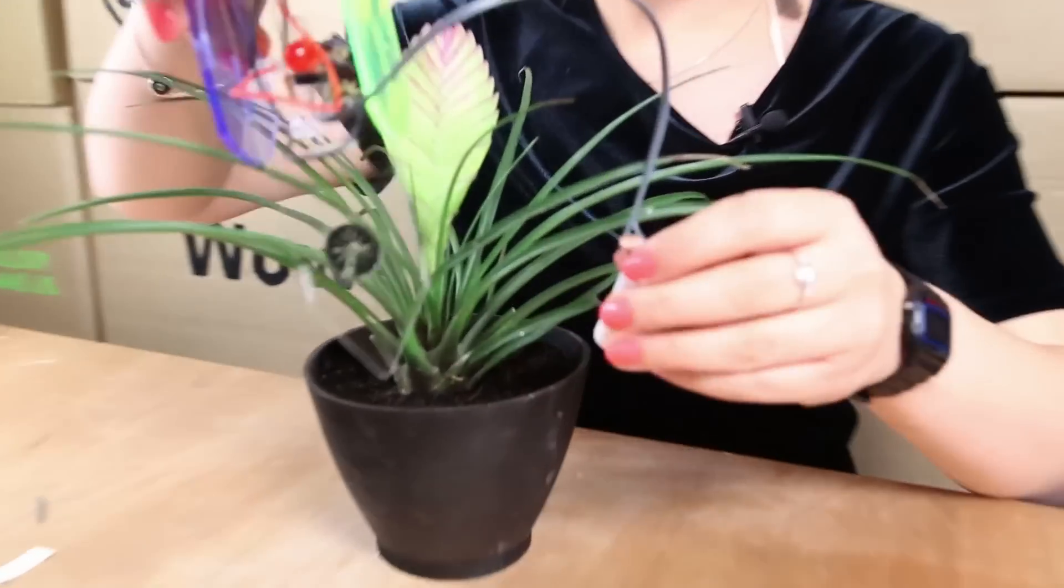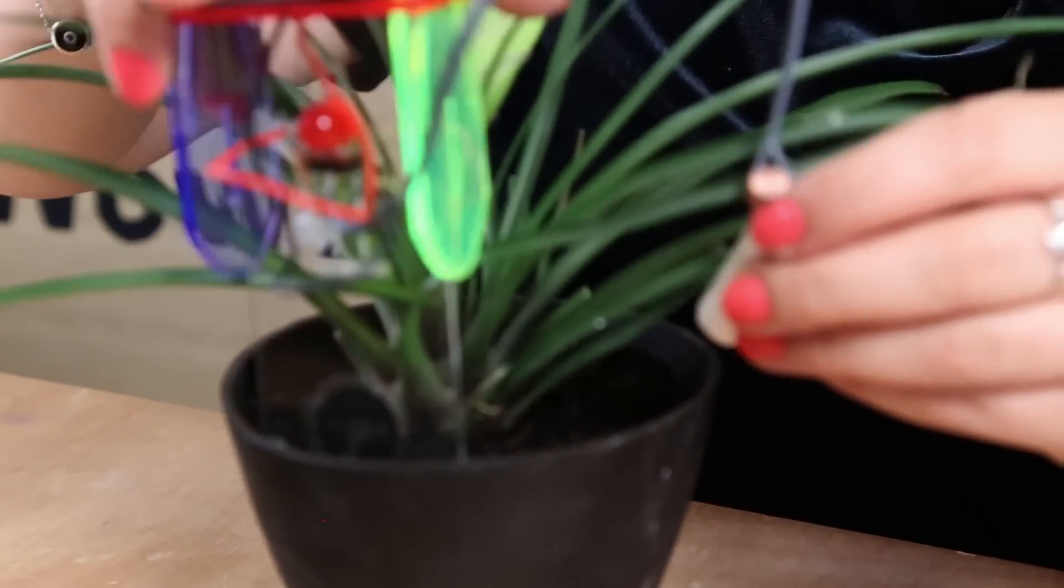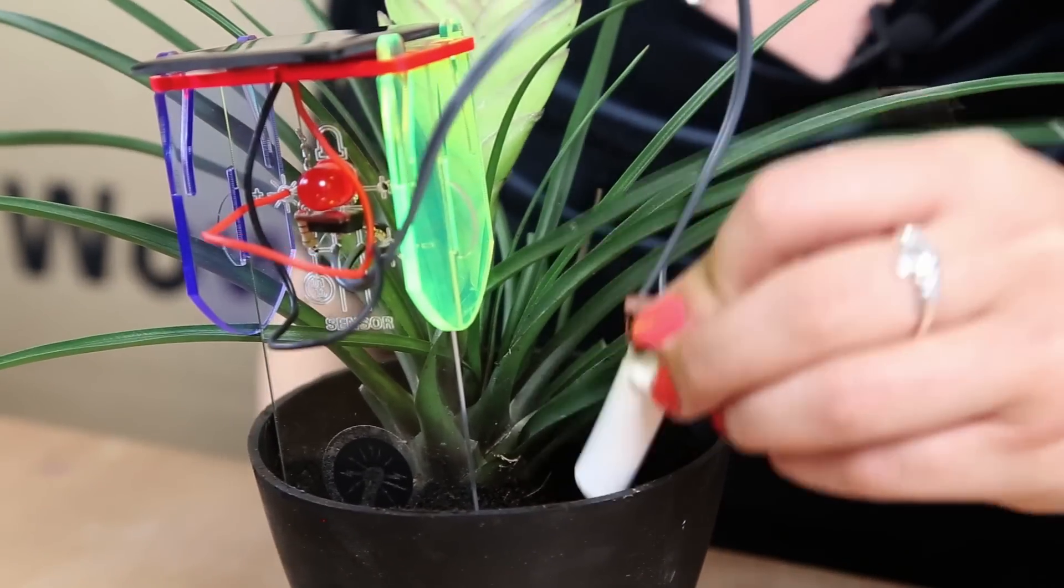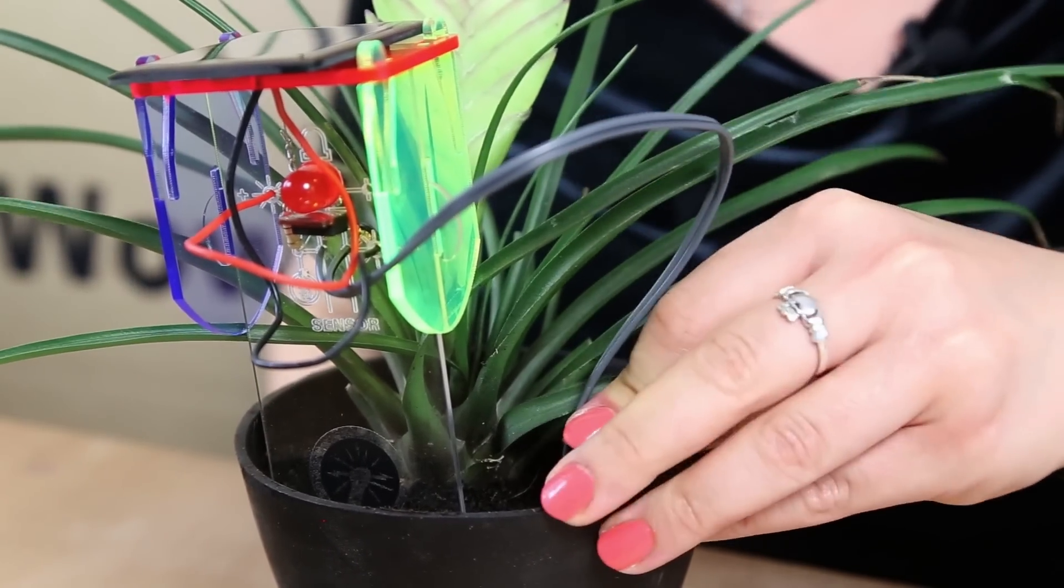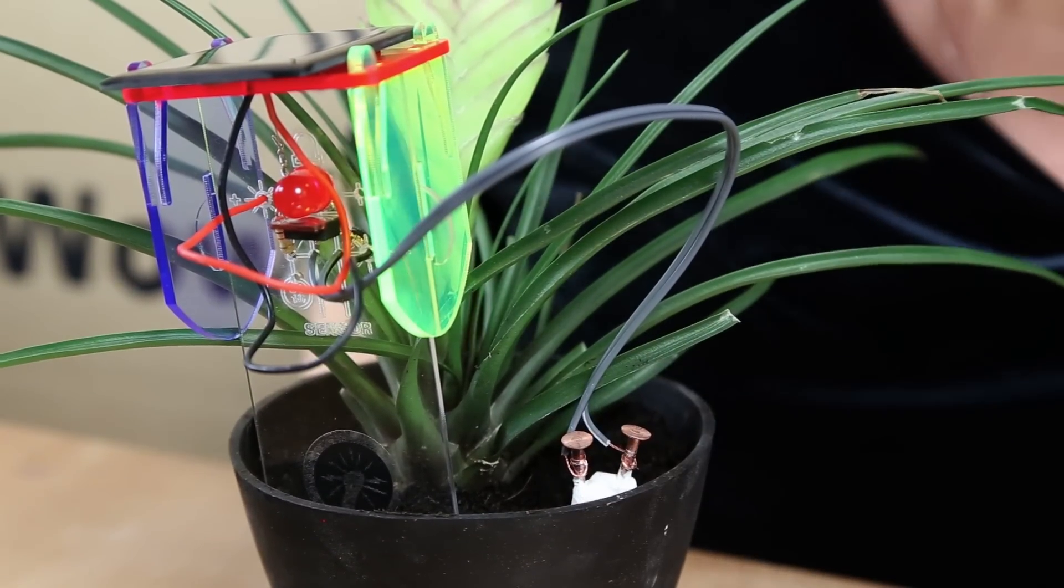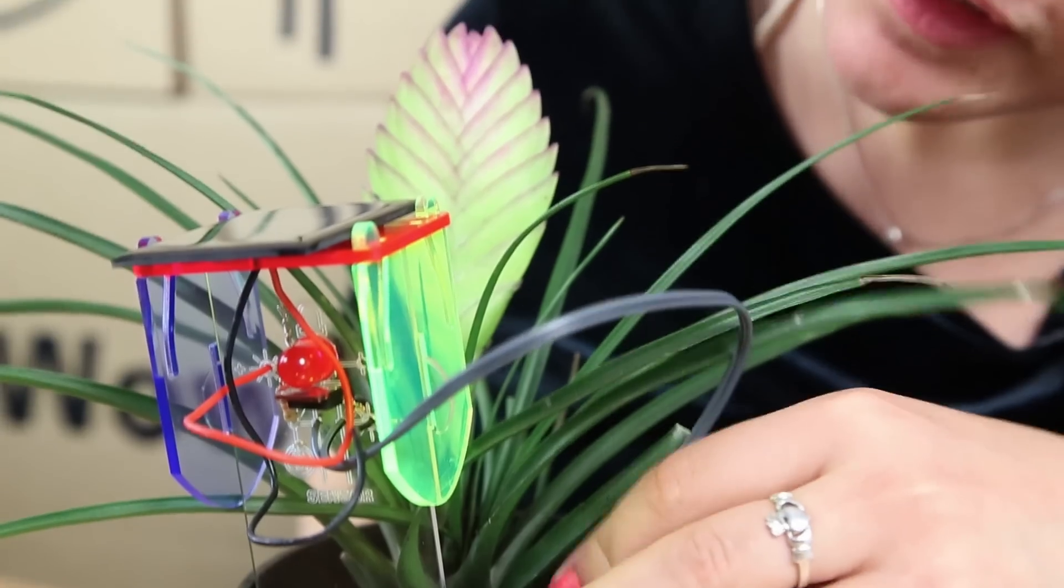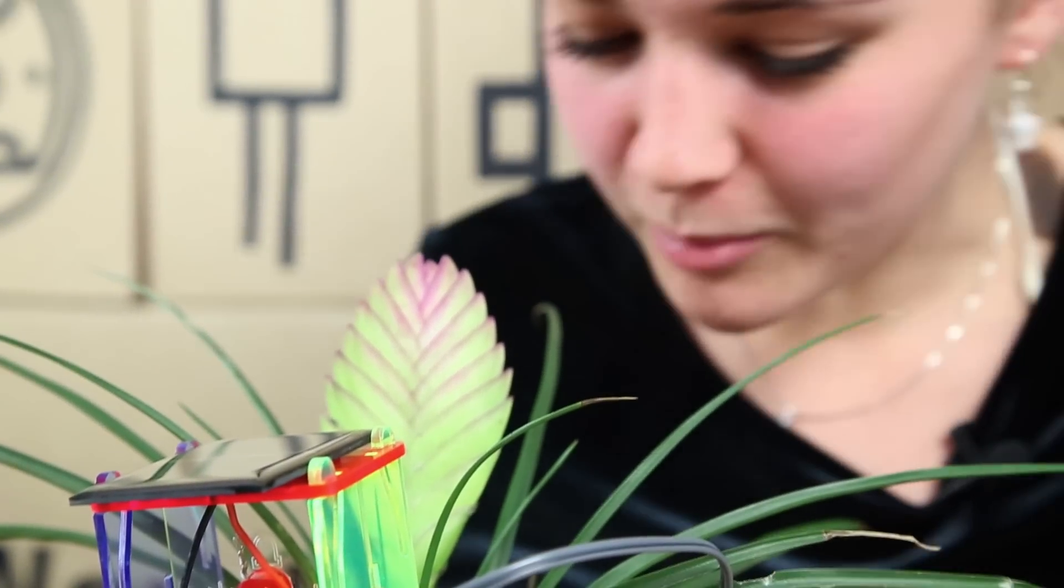So if you use the little pointy bit to stick it into the soil like that, and your sensor, the same thing. Stick it into the soil so it can start measuring moisture. And yeah, there you go. So it's flashing, which means my plant needs watering.